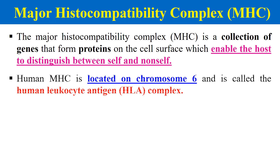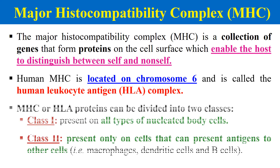MHC genes are present on chromosome number 6 in humans. In humans, the region where these genes are present is known as HLA, which stands for human leukocyte antigen complex.